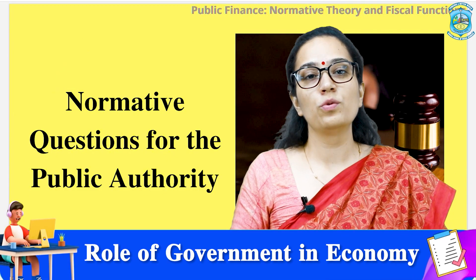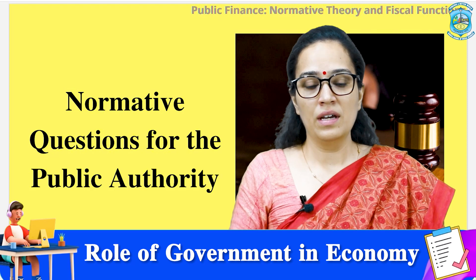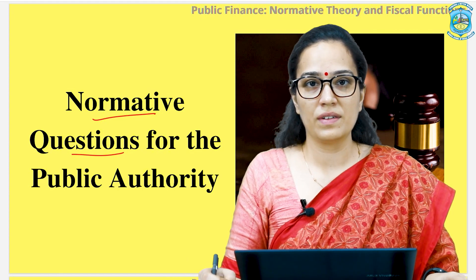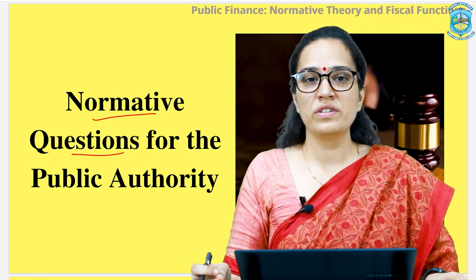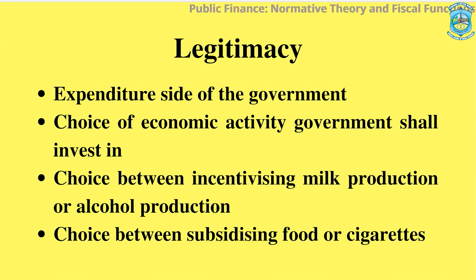Now let us see what is the role of government in an economy. The role of government is streamlined as and when the normative questions posed to the government are answered through government actions. The first normative question that a government has to answer is with respect to legitimacy. It corresponds to the expenditure side of the government budget. Here, the government has to make a choice as to which economic activity to indulge in or invest in, because of the limited or scarce resources available with the government.